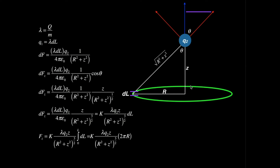Keep in mind that Q2 is positioned directly over the center of the circle. The distance between any point on the ring and the origin is given by R, and the distance between the origin and Q2 above the ring is Z. I've drawn all the triangles here so I can explain how to do this problem.